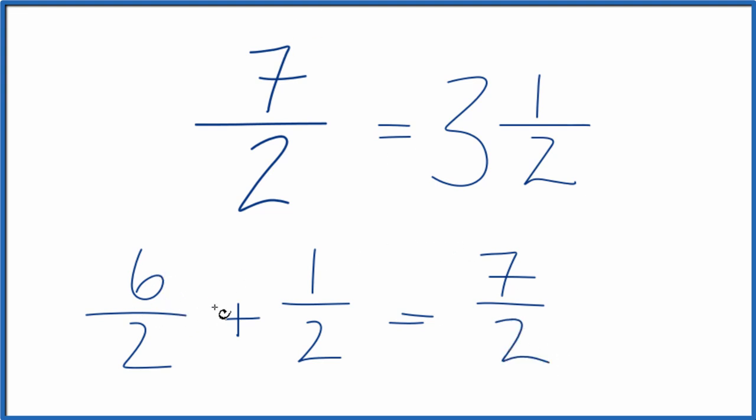But instead of 6 over 2, we know that 6 divided by 2 is 3, plus the 1 half here. And we end up with 3 and a half, which is what we ended up with before.